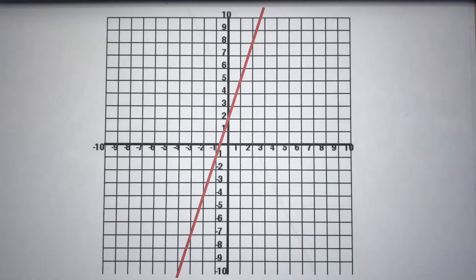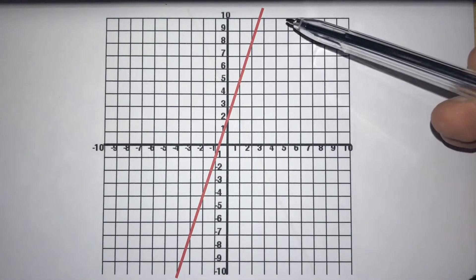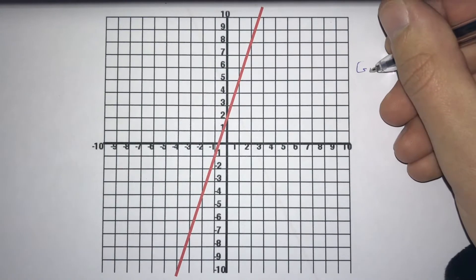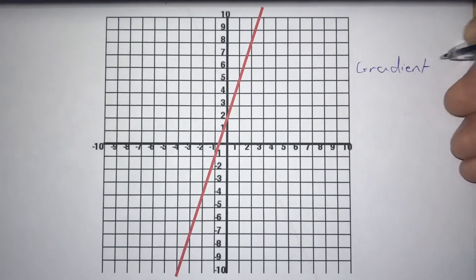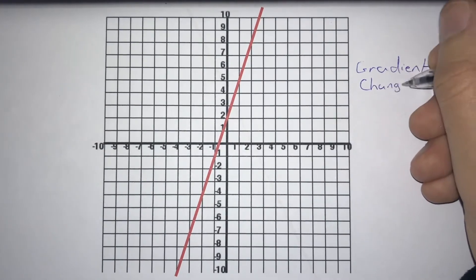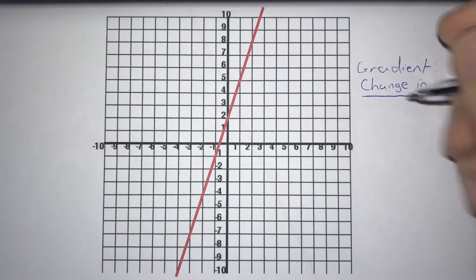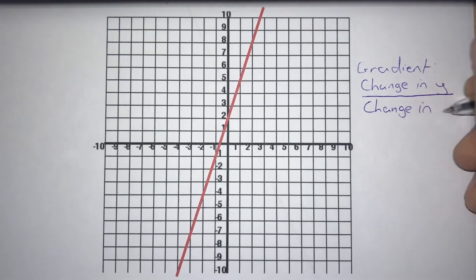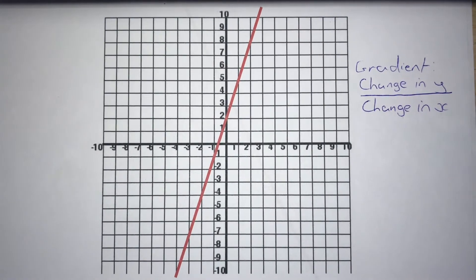So this first graph we've got here, we see going up from the bottom left towards the top right. We're going to find our gradient first of all. And to find a gradient, we need to do the change in our y value divided by our change in our x value. Now to find what our change in y and change in x are, we need to draw a triangle.